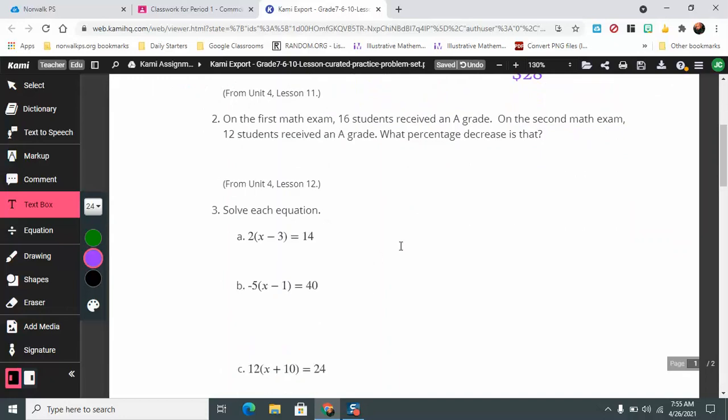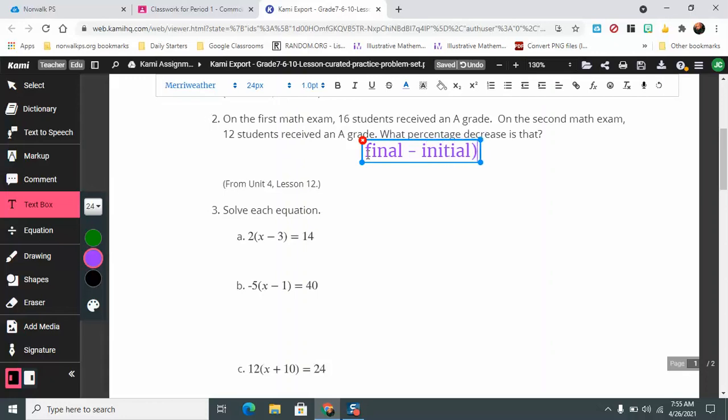Next question. On the first math exam, 16 students received an A. On the second one, 12 received an A. What is the percent decrease? When you do percent decrease, it's the final amount minus the initial amount divided by the initial amount. That's the verbal model that you use for all percent increase decrease.